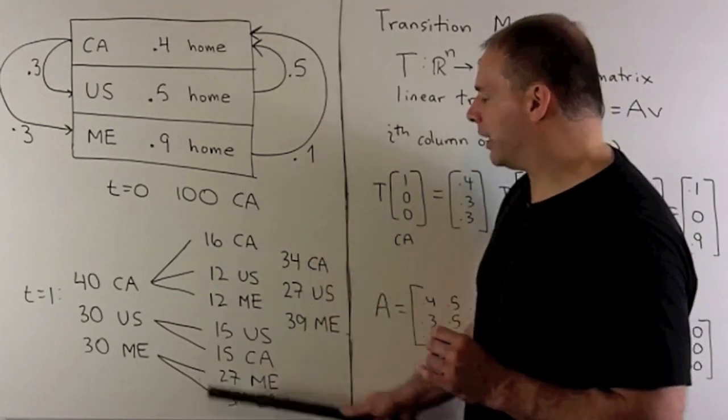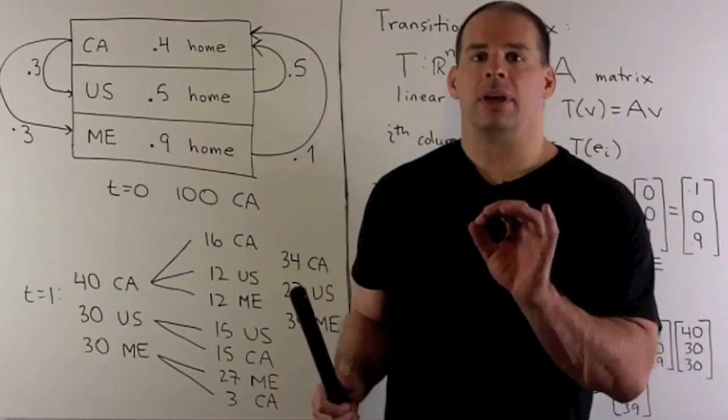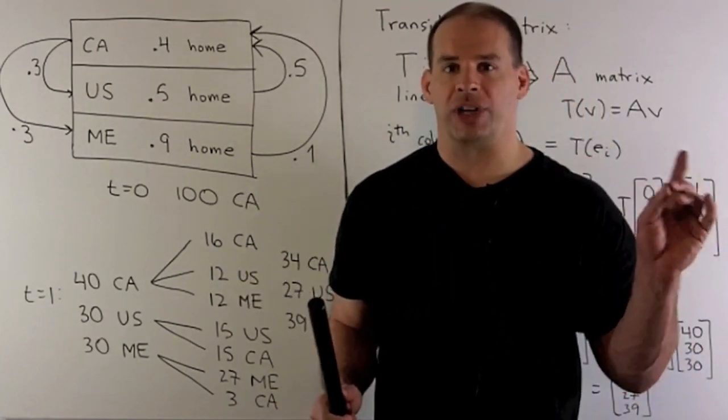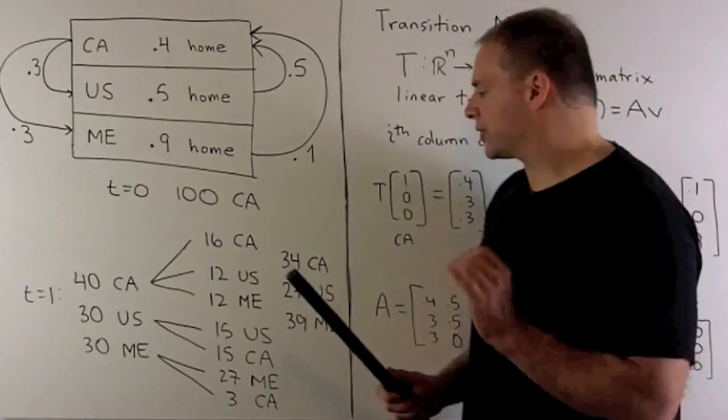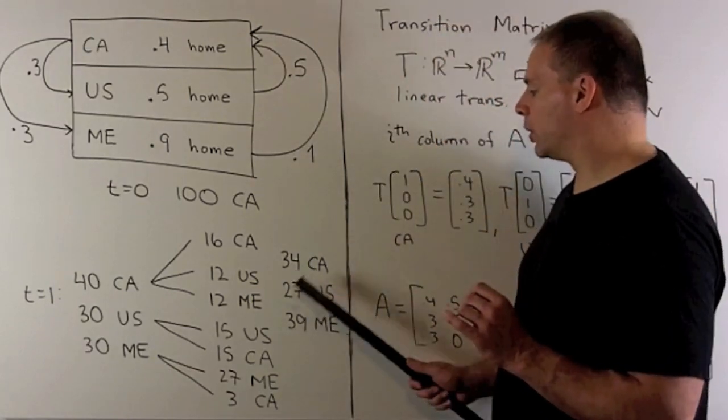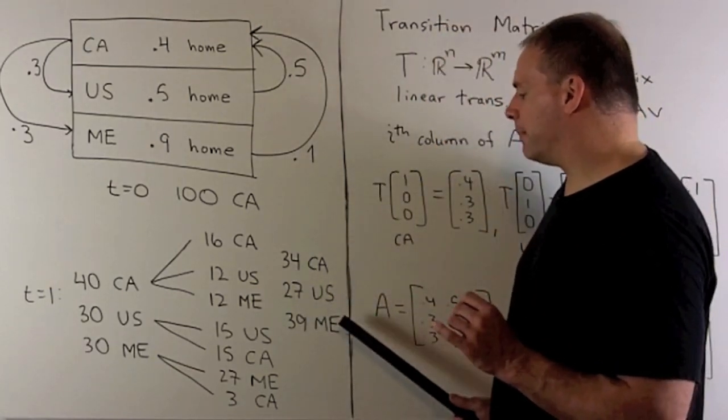For a final answer, we have to lump like populations for a given country together. It's going to give me 34 in Canada, 27 in the US, 39 in Mexico.